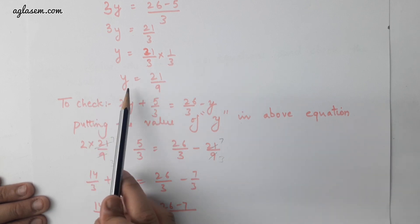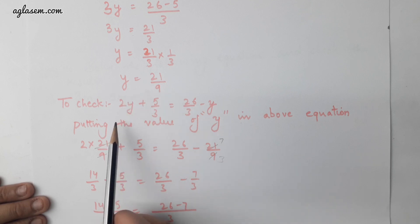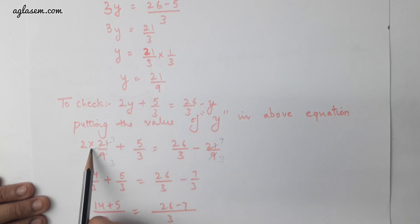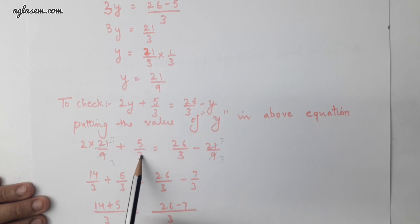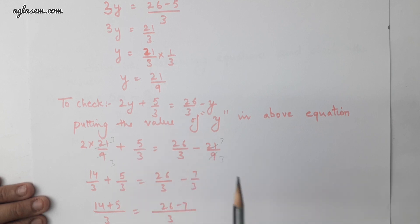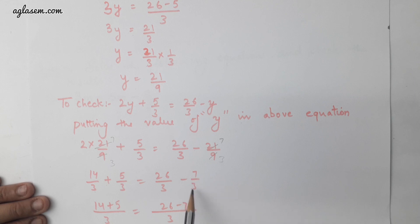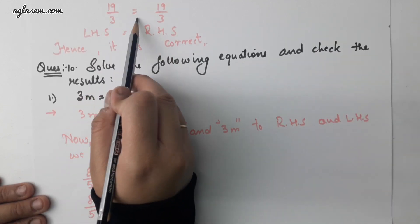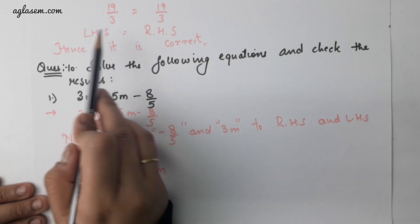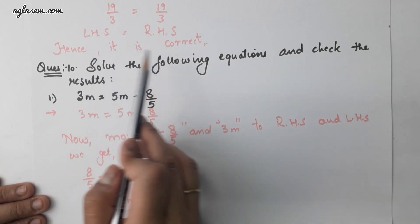To check, we will put the value of y in the given equation. We get 2 into 21 by 9 plus 5 by 3 equals to 26 by 3 minus 21 by 9, which simplifies to 14 by 3 plus 5 by 3 equals to 26 by 3 minus 7 by 3. Taking LCM gives 19 by 3 equals to 19 by 3. So LHS is equal to RHS. Hence it is correct.